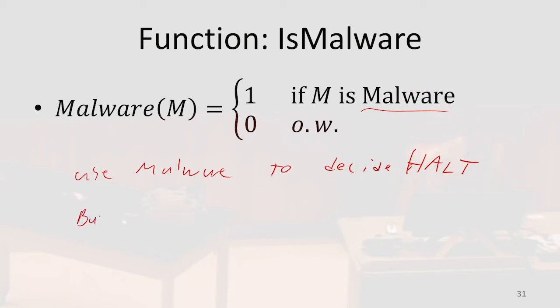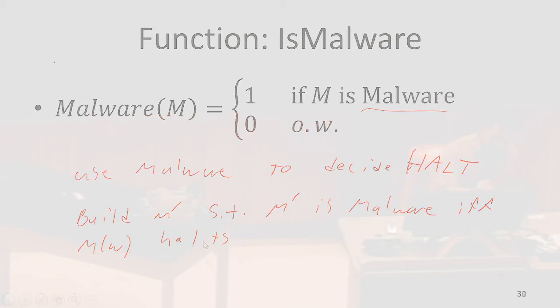we're going to build an M prime such that M prime is malware if and only if M on W, which was the input for halt, does actually halt. So essentially, what we're going to do here is we're going to define our M prime very similarly to what we did before.